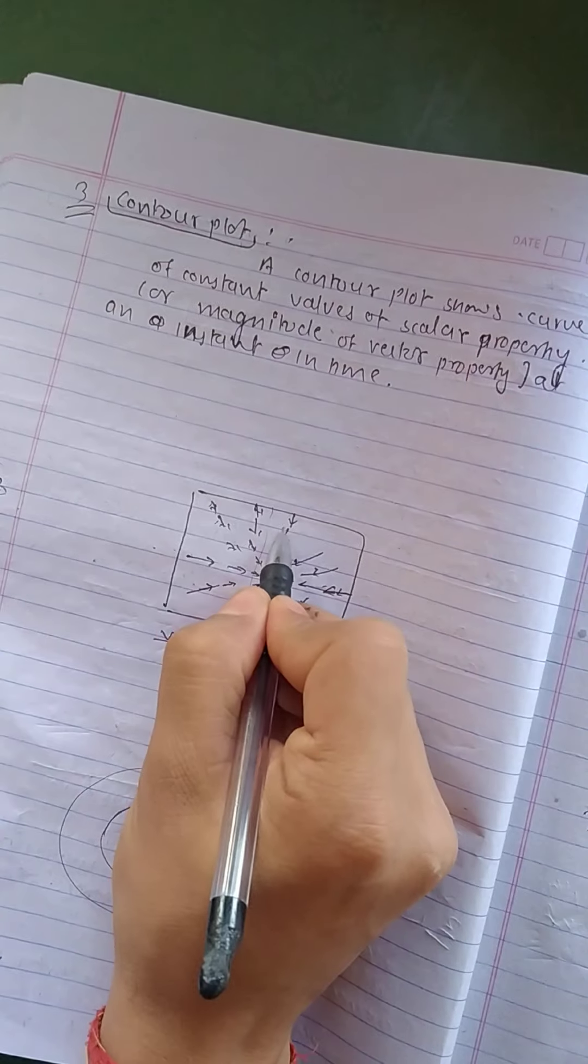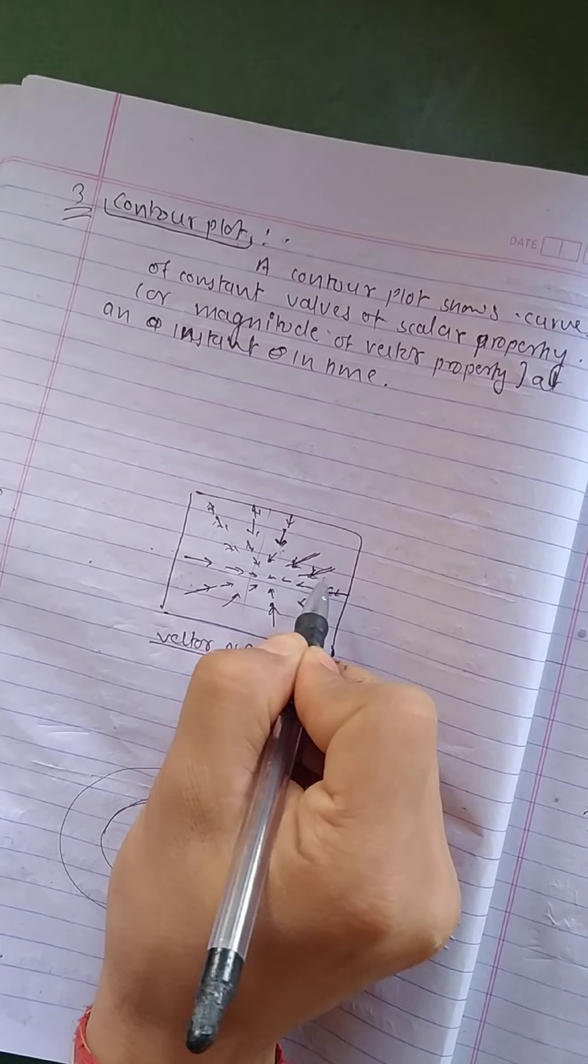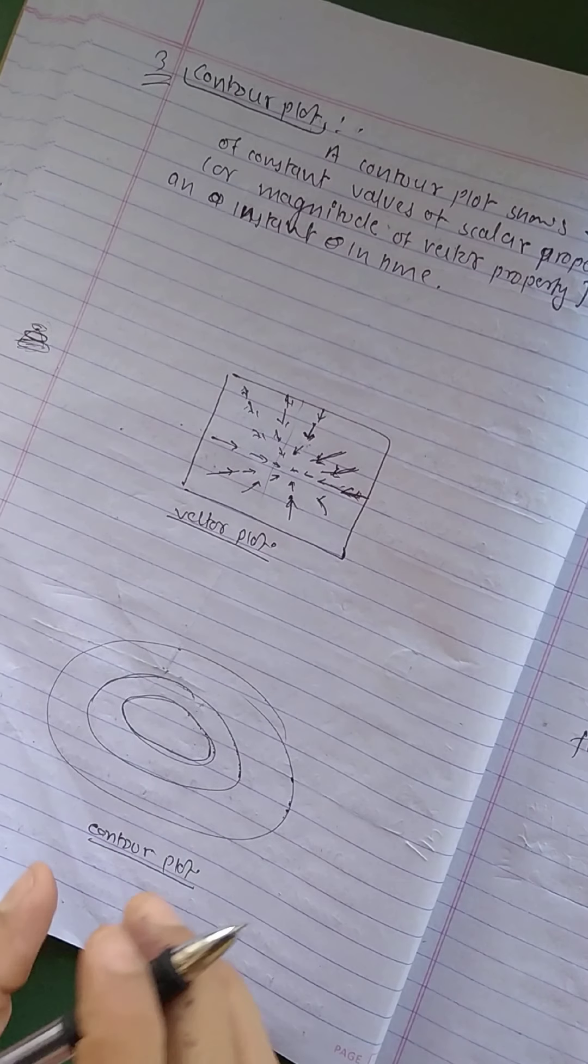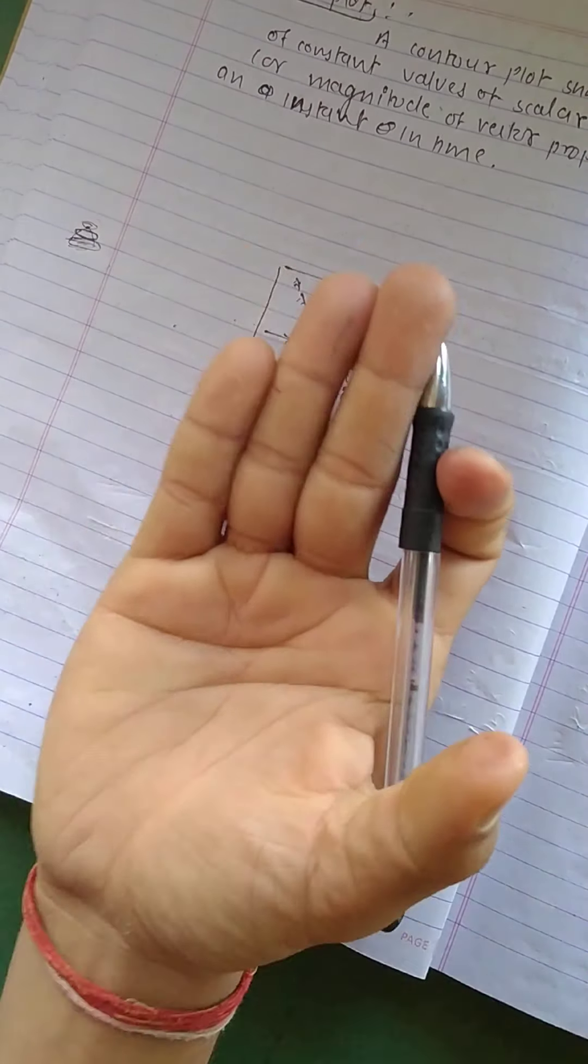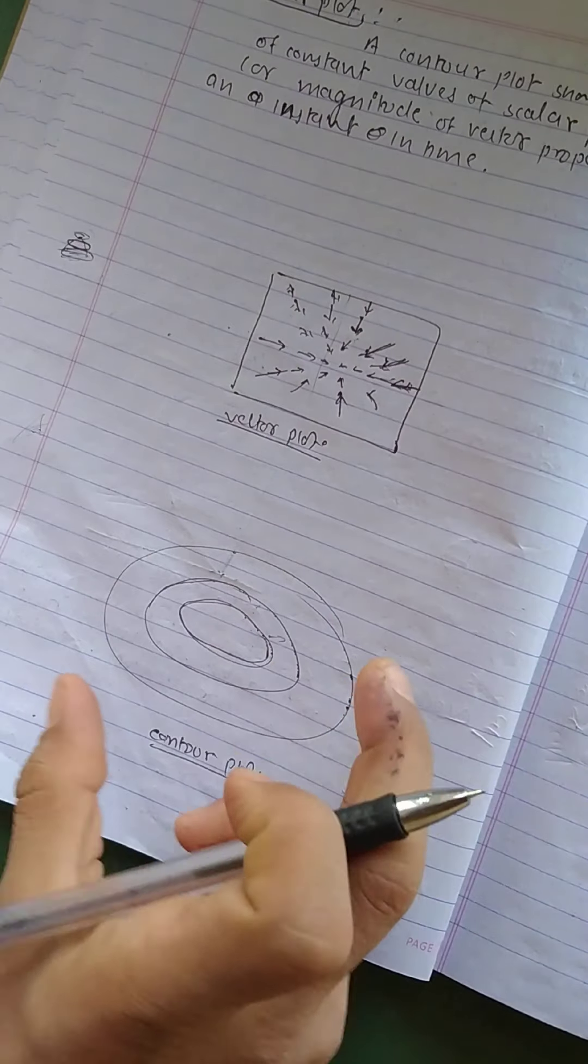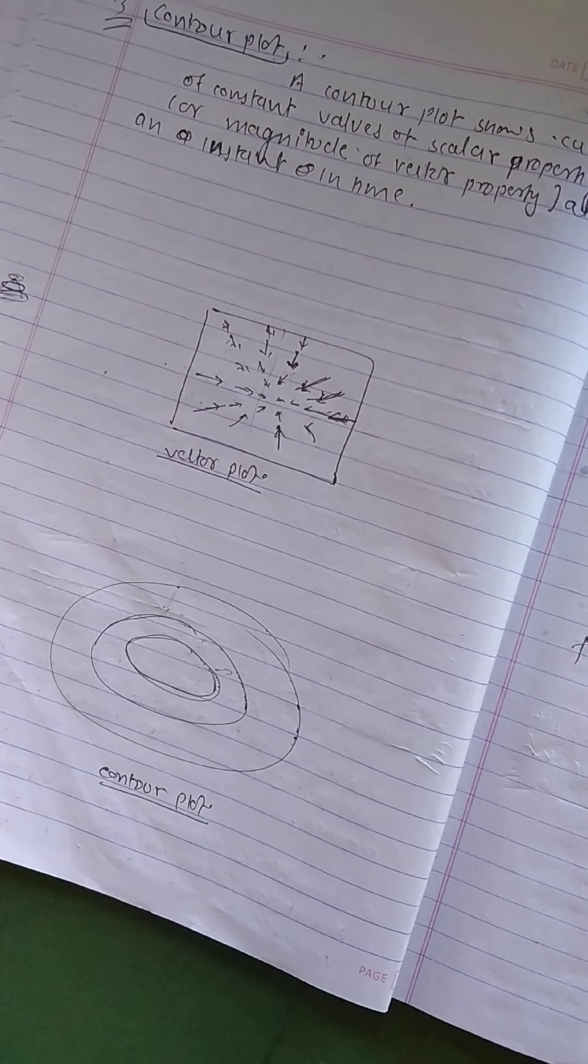Vector plot is an array of arrows which represent the magnitude and direction of the vector field. This is like a contour plot. If you talk about the topography map, you are familiar with this contour plot. Thank you all. If you like my videos, please do subscribe.